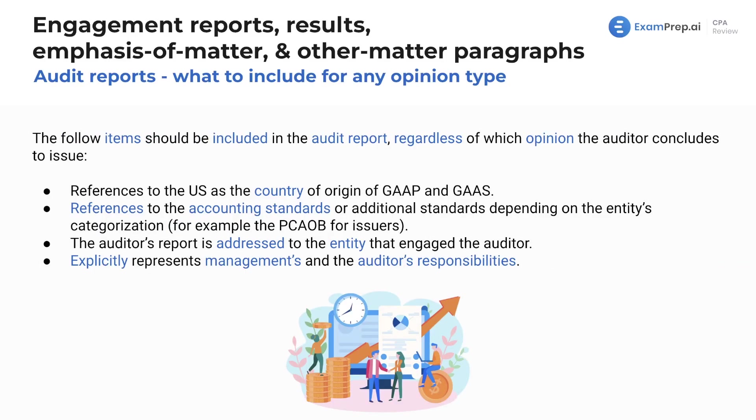Talking about audit reports and what we're going to include for each opinion type — regardless of the opinion, whether it's a perfect clean opinion or an awful one where the financial statements are an absolute mess — what are you going to include in that audit report? Well, you're going to include references to the U.S. as the country of origin of GAAP and GAAS. These are items that are here because you could easily see them as a multiple choice question or a big drop-down listing of what's included in the audit report no matter what.